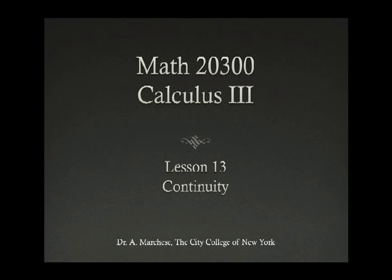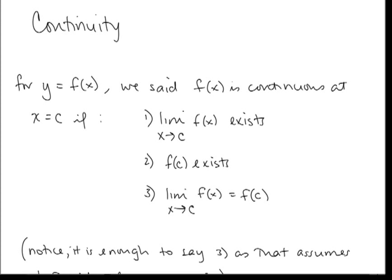This is lesson 13 in our Calculus 3 series: Continuity. In Calc 1, when we talked about continuity, we said f(x) is continuous at x = c if three things held: the limit as x goes to c of f(x) exists, f(c) exists, and if those two equal each other — so the limit as x goes to c of f(x) equals f(c).